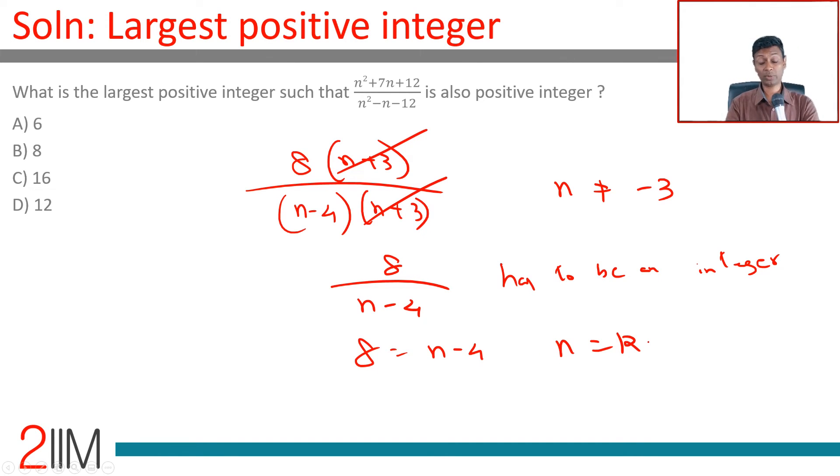If n were any more than 12, 13, 14, 15, 16, this will become a proper fraction, a positive proper fraction, and it will not be an integer. But the largest value n can take is 12.